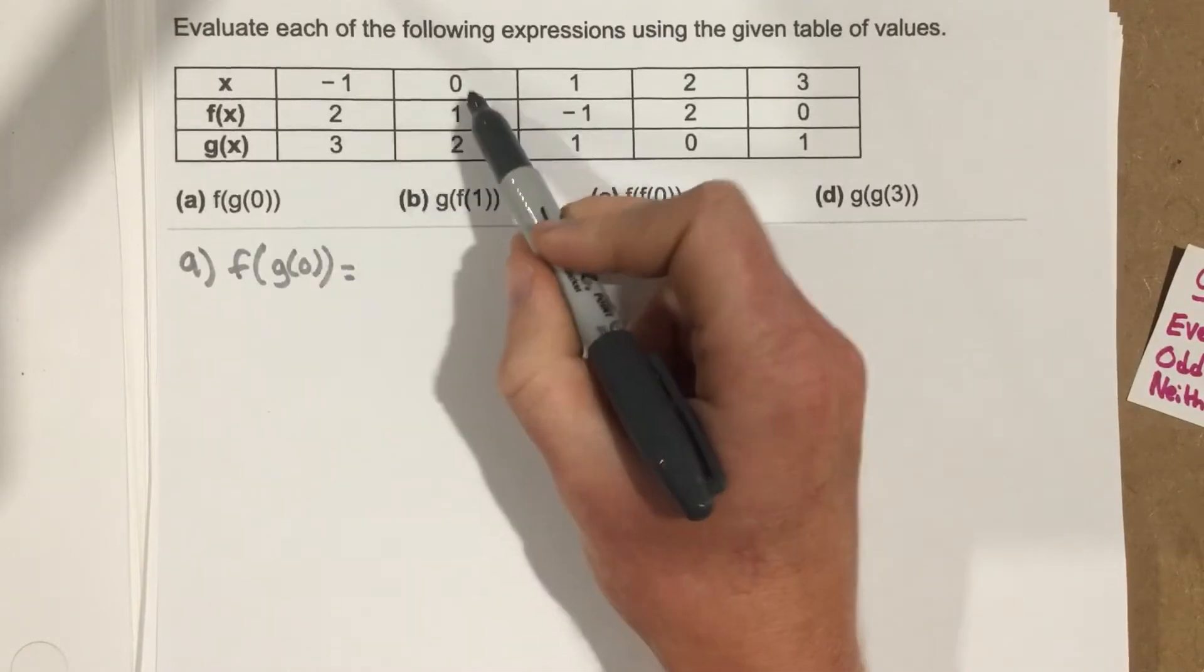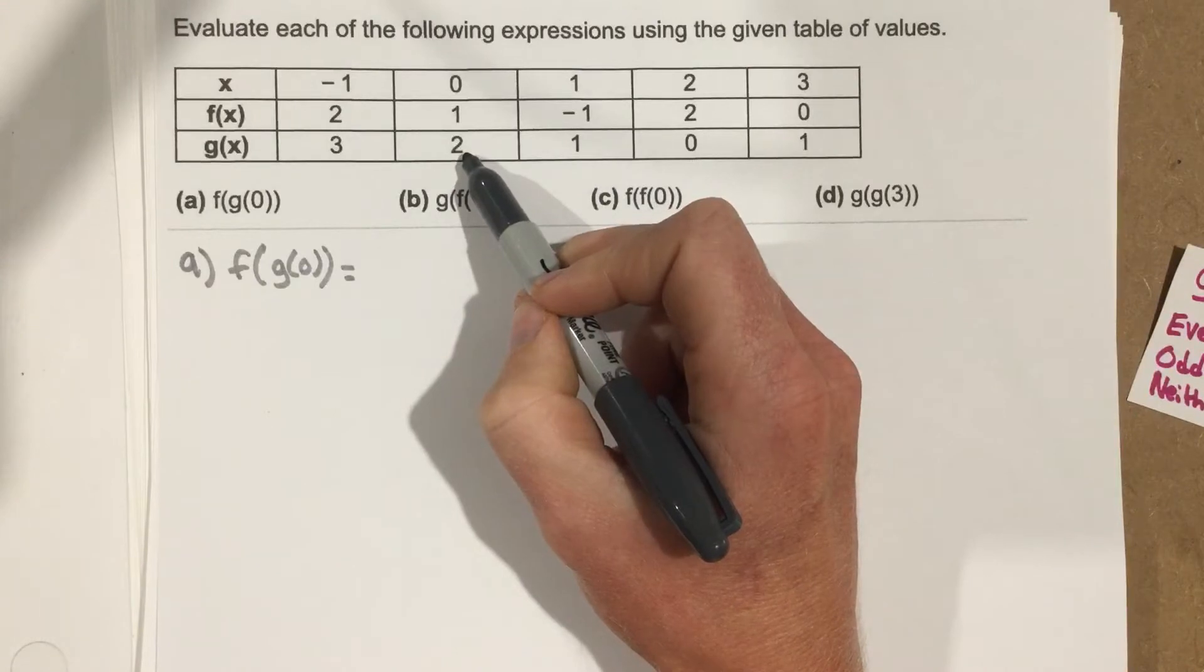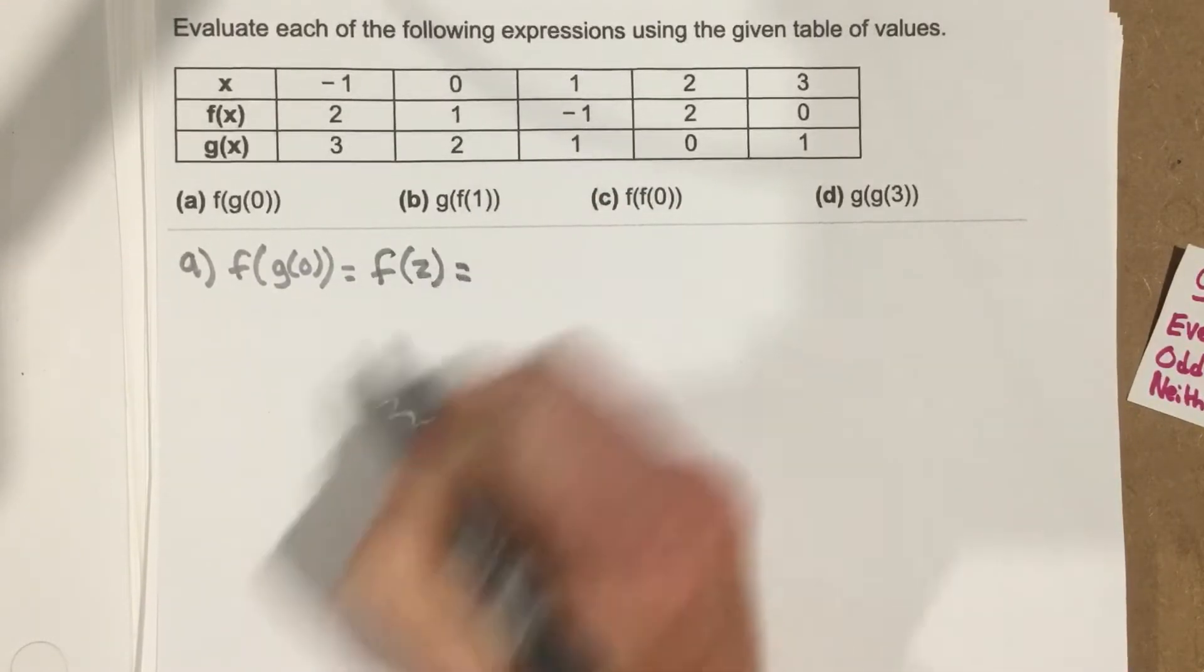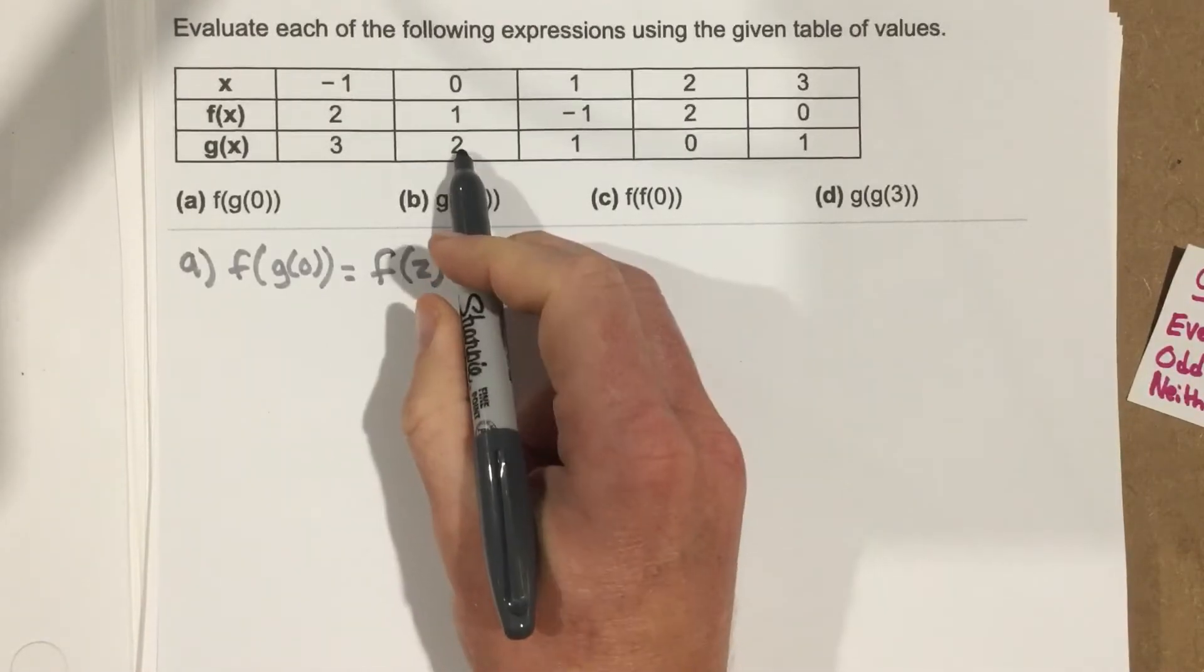so 0 is x, remember, I go to the x value of 0, I look at what the output for g is, and that's 2. So I have f of 2 now written there because I replaced g of 0 with the output which I got, which was 2.